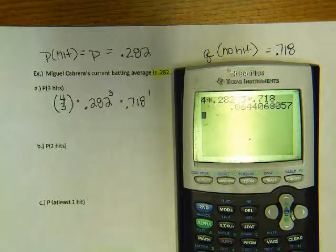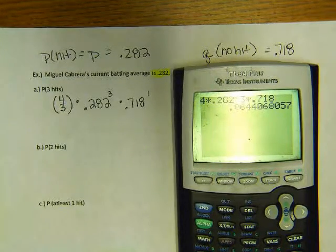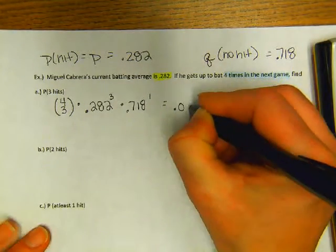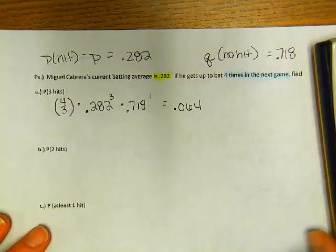Okay, I'll use three decimals because that was what was used in the problem. The probability that he gets three hits in the next game is then .064.